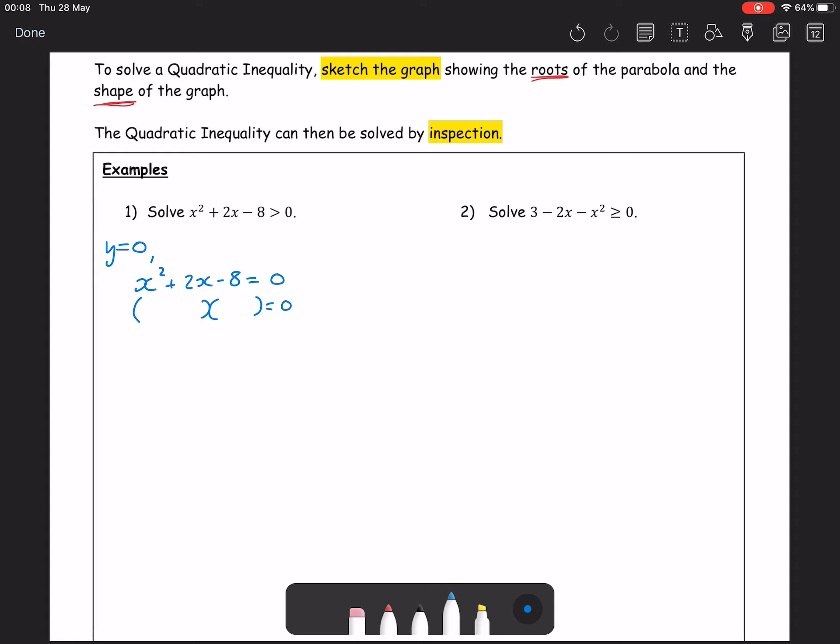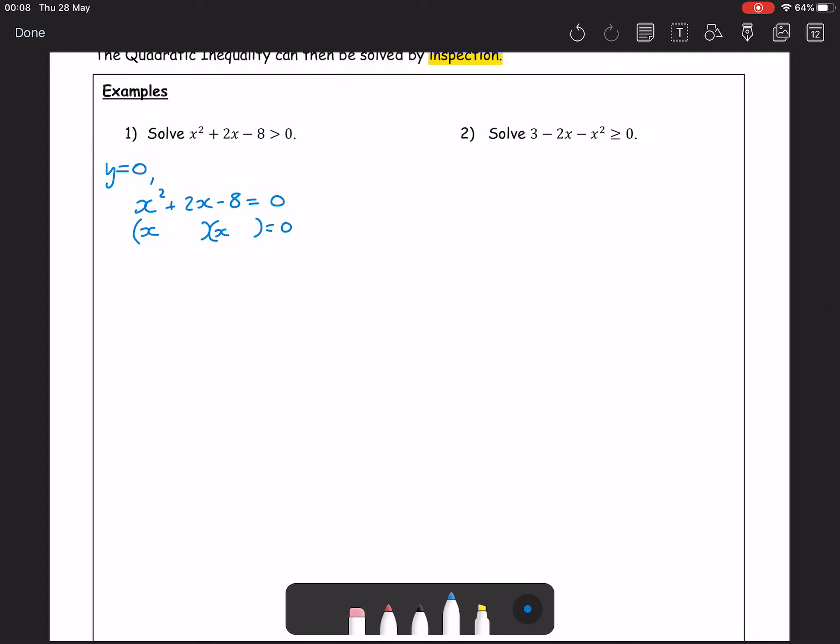Again, make sure you're factorizing how you are comfortable. So in this particular case, the only way I can get x² is x by x. To get my 8, I've got an option of 1 and 8, and 2 and 4. And to get my plus 2x, I'm going to have to have a difference of 4 and 2. And that will be plus 4 minus 2. Make sure you check your factorizing. Okay, factorize and solve. So roots occur at x equals 2 and x equals minus 4.